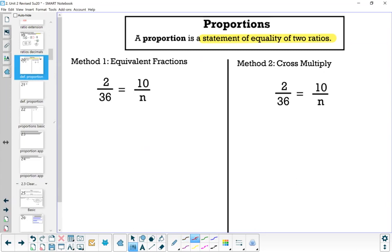So you see here on the left side, you have this fraction, 2 over 36. On the right side, 10 over n. So if I want to write equivalent fractions, 2 over 36, how would I get 2 over 36 to have a denominator of, I'm sorry, a numerator of 10?